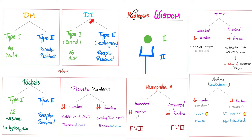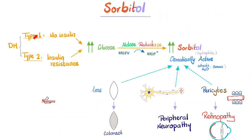How about diabetes insipidus? You call type 1 the central one, which means there is no ADH. And type 2 is the nephrogenic one — there is ADH hormone, it's just the receptor is not working; the kidney is not listening. The same thing could be said about rickets, hemophilia, and others. So whether I have type 1 diabetes with no insulin, or type 2 diabetes where there is some insulin but the receptor is not listening — insulin resistance, glucose intolerance.